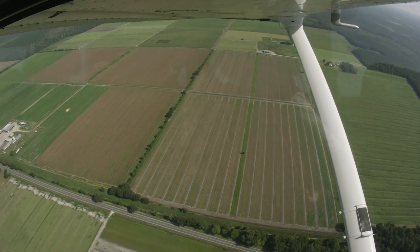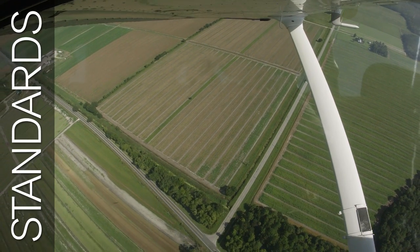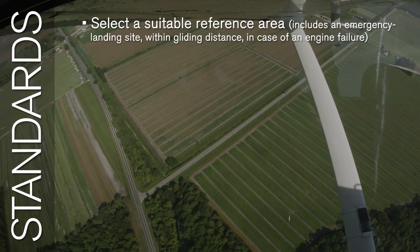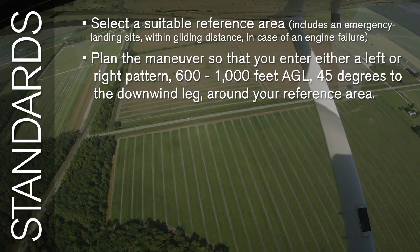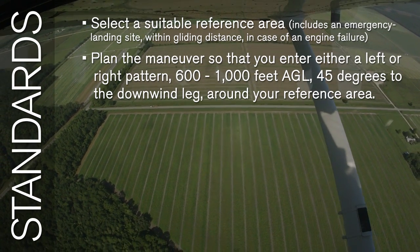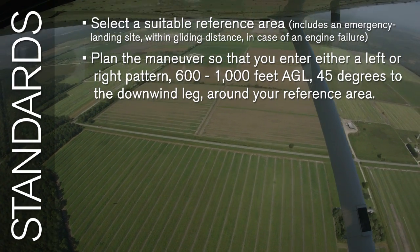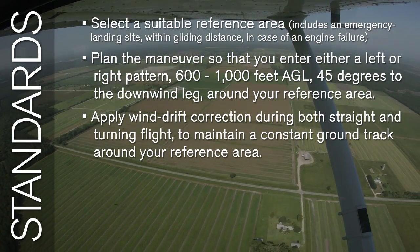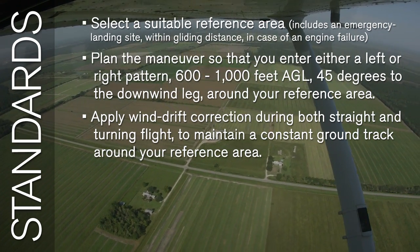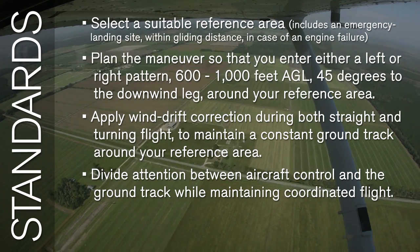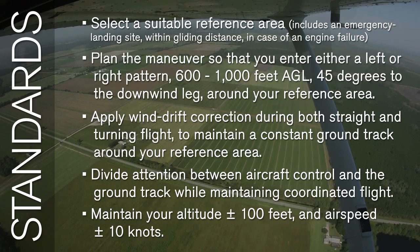Now that we've covered how to fly the maneuver, let's look at the end goals for your skills in a rectangular course. Some of the standards for the end-of-course check ride include: select a suitable reference area that includes an emergency landing site within gliding distance in case of engine failure; plan the maneuver so that you enter either a left or right pattern, 600 to 1,000 feet AGL, 45 degrees to the downwind leg around your reference area; apply wind drift correction during both straight and turning flight to maintain a constant ground track; divide attention between aircraft control and ground track while maintaining coordinated flight; and maintain your altitude plus or minus 100 feet and airspeed plus or minus 10 knots.